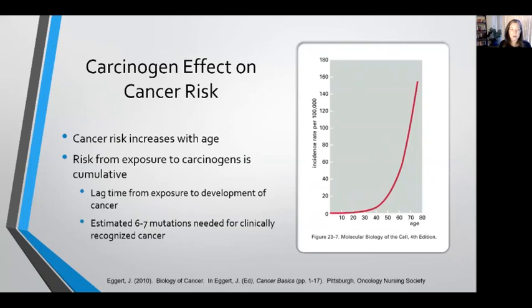Our cancer risk tends to increase with age because the risk from exposure to these different types of carcinogens tends to be cumulative. There is a lag time from exposure to a carcinogen to the development of a cancer. As we age, the more exposures we have to carcinogens, the more likely we are to develop cancer. This graph shows newly diagnosed cases of colon cancer in women in England and Wales, and you can see that as age increases to 60, 70, 80 years, risk greatly increases. It's estimated that around six to seven mutations are needed for a clinically recognized cancer, which is where that lag time comes into play.